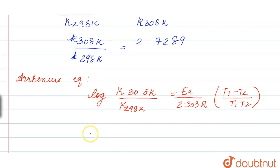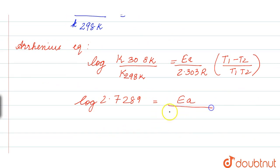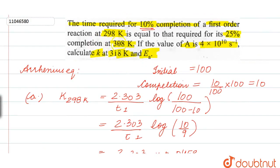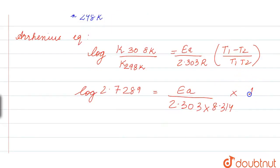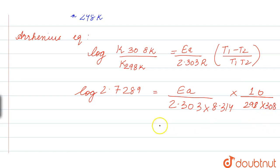Log of 2.7289 equals EA upon 2.303 multiplied by R, which is 8.314, multiplied by the temperature difference of 10 (318 minus 308), divided by 298 multiplied by 308 Kelvin. Solving this gives EA equal to 76.623 kilojoules per mole.